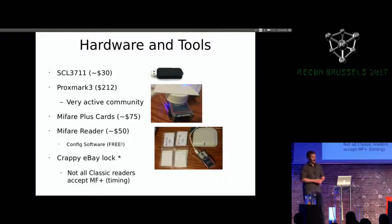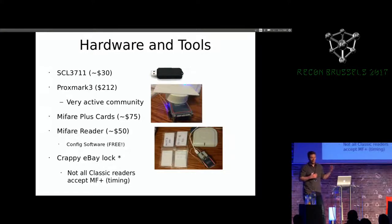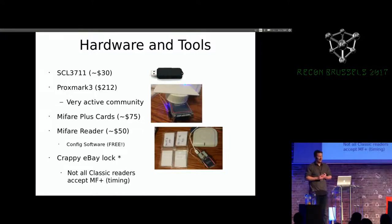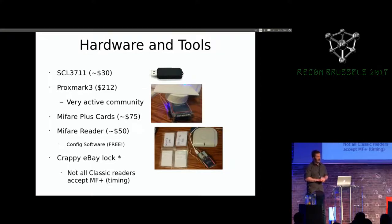The hardware and tools I used include the SCL3711, a $30 USB reader, and the Proxmark, which is more expensive but has a very active community and was a useful tool to learn the core of what I needed. I also used Mifare Plus cards with reader and config software to configure factory-fresh cards like a hotel or transportation system might. I also bought a lock off eBay for $80 — though one mistake I made is that not all Mifare Classic readers accept Mifare Plus as intended, and this lock actually doesn't work with Mifare Plus cards.